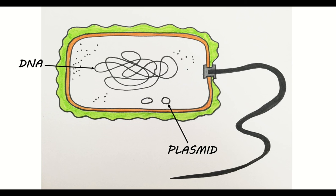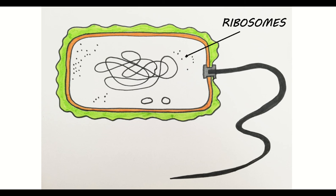So this can cause problems for us when we're trying to treat bacterial infections. While bacteria do not have any membrane-bound organelles, they do have ribosomes, which are needed for synthesizing proteins. Although bacteria's ribosomes are smaller than the ribosomes found in eukaryotic cells.